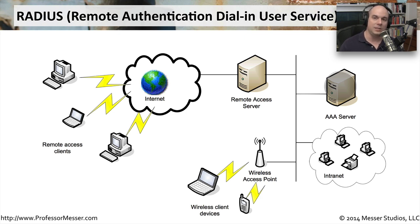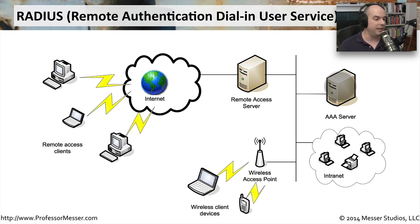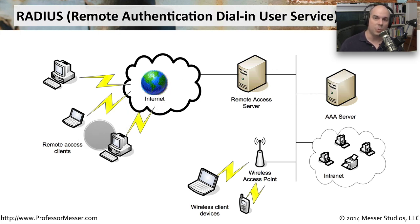The AAA server checks the username, password, and any two-factor authentication information. If everything is legitimate, it logs you in and records when you entered the network, and when you log off, it records that as well. This centralization means it doesn't matter whether you're coming in remotely, as a wireless client, or on the local intranet — everyone gets the same authentication using the same username and password.